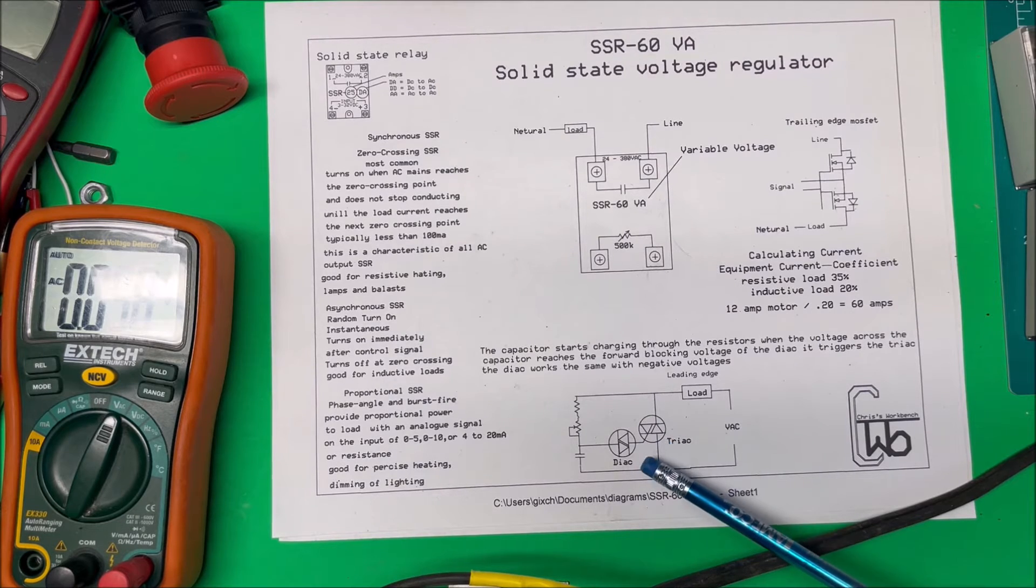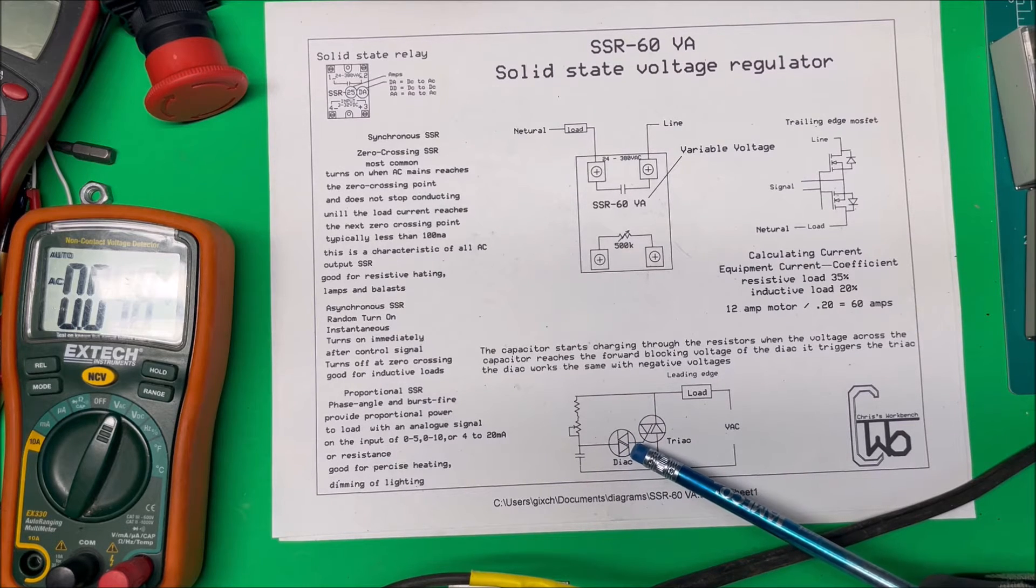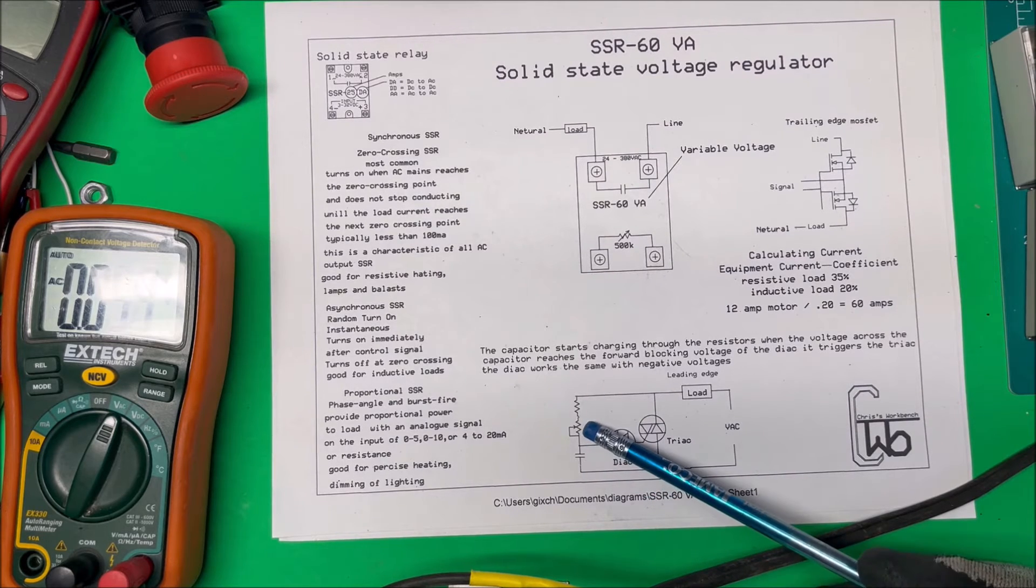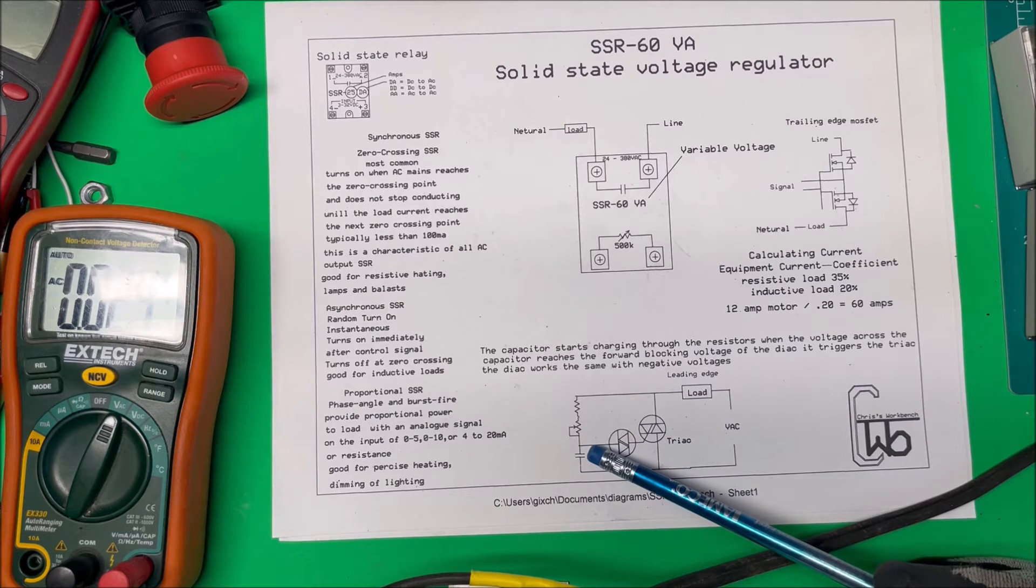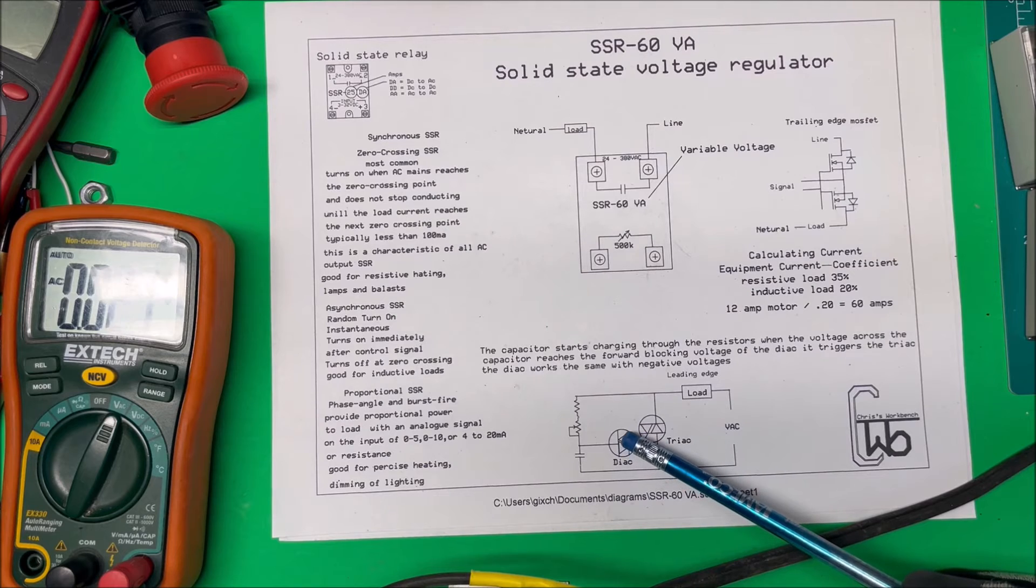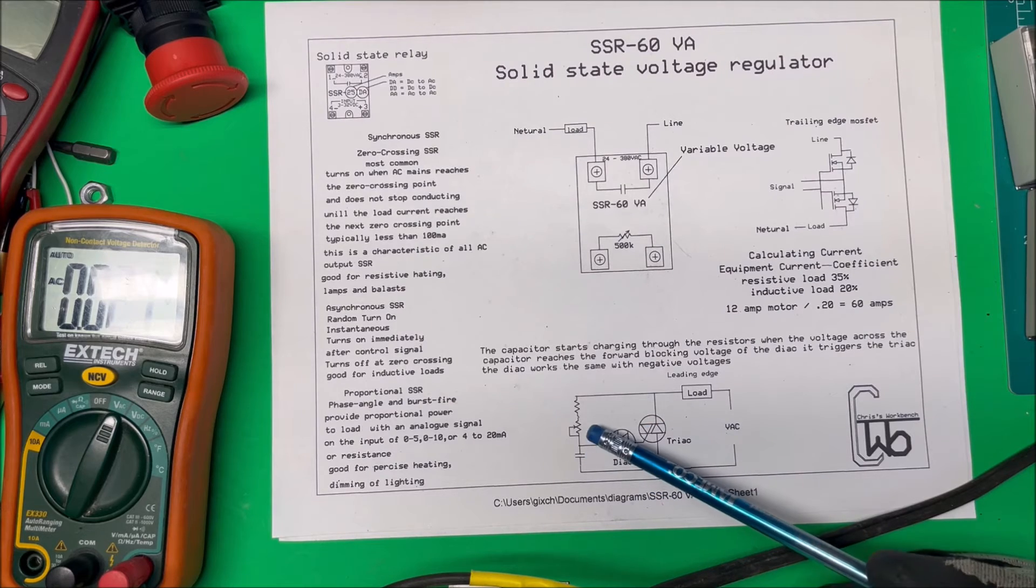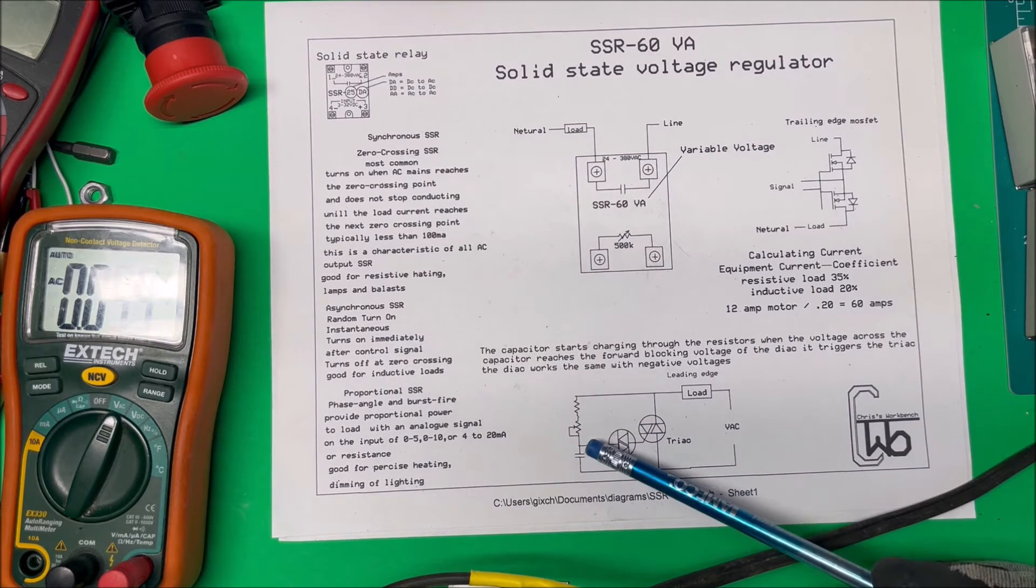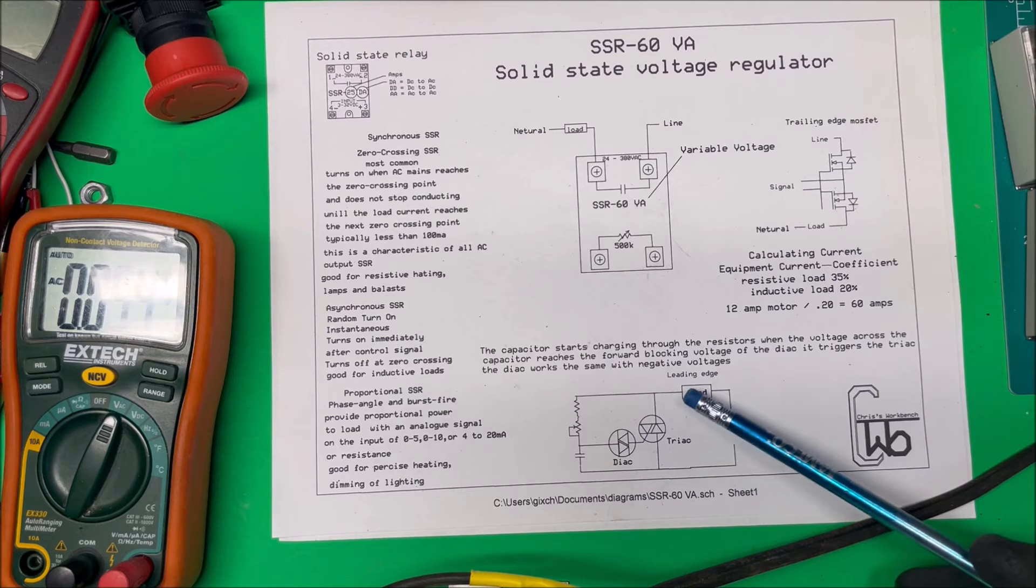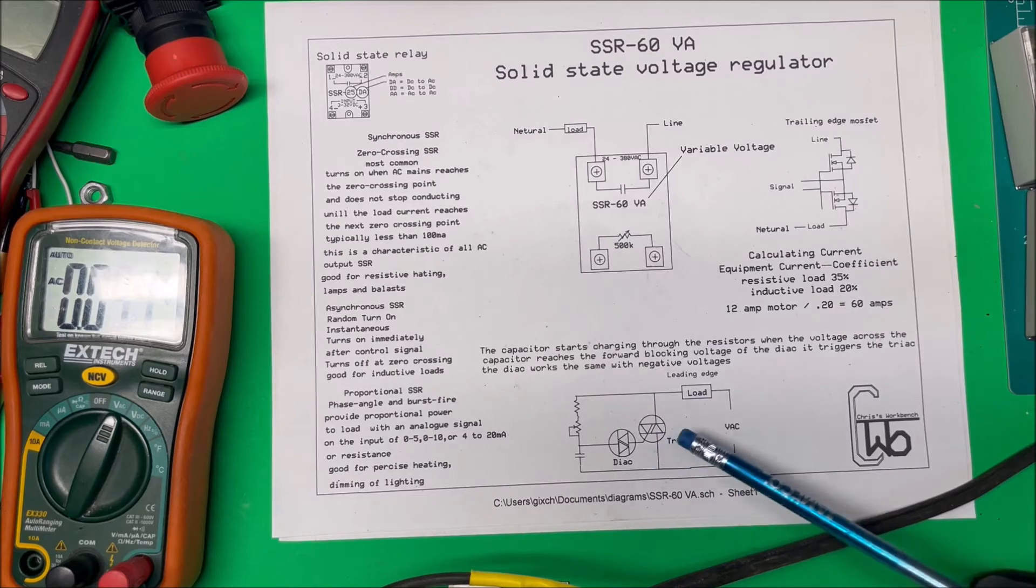So what happens on this triac, we have a diac here which is a couple of diodes, and what they do is they'll break down about 30 volts and turn on. We have a capacitor and a resistor here and it makes an RC time constant. So when this capacitor charges up to 30 volts, it triggers the diac which turns the triac on. And you vary the time that it turns on with the potentiometer here. So you're using an RC time constant to trigger the diac which triggers your triac, and it'll clip the sine wave coming in at a certain point.